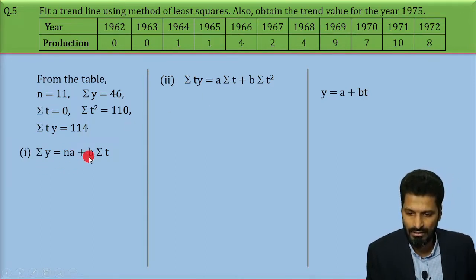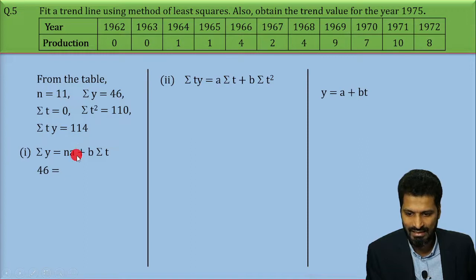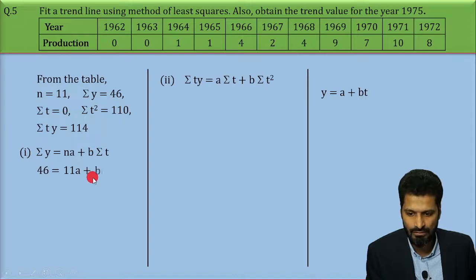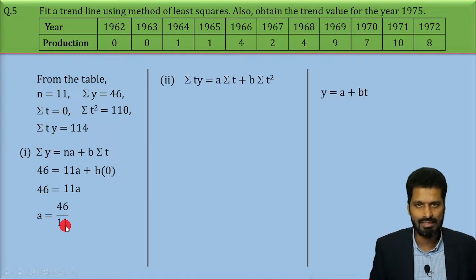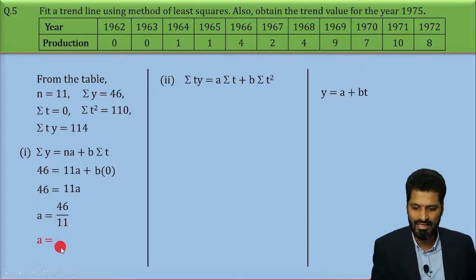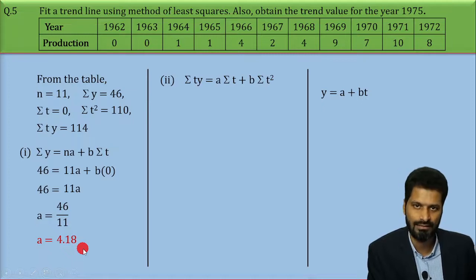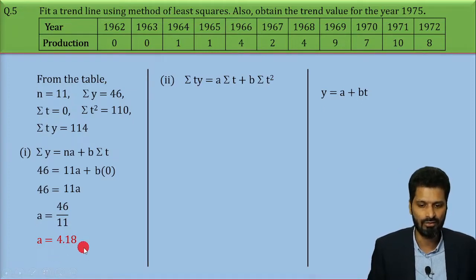Let us solve them one by one. From the first equation: Σy = na + b·Σt. Substituting: 46 = 11a + b × 0. Since b × 0 = 0, we get 46 = 11a. Rearranging: a = 46 ÷ 11, which gives us a = 4.18. So the first unknown, a = 4.18, is found.